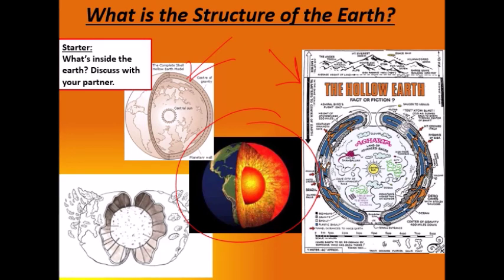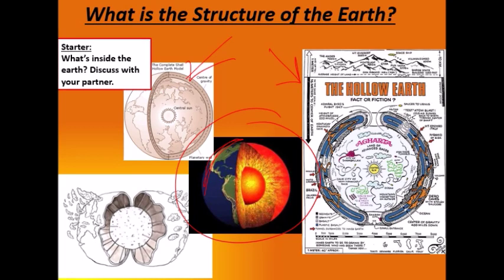We do have some ideas about what we think it's like inside the earth. It starts with a very, very hot inner core, an almost-as-hot outer core, and then as we go out towards the crust — which is the top layer we stand on — we have a hard solid outer shell which we stand on, build on, and on which the ocean sits. This is the current structure that scientists believe is inside the earth.